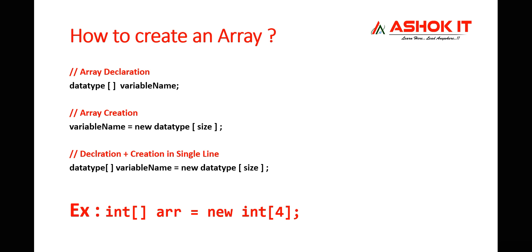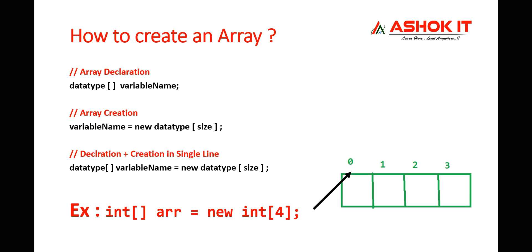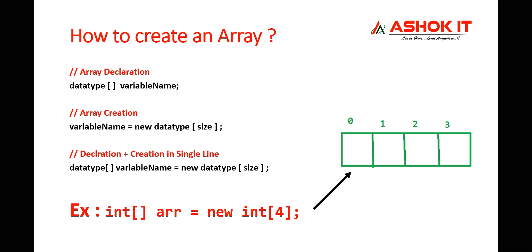For example: int arr[] = new int[4]. Here 'int' is the data type, 'arr' is the variable name, 'new' is the keyword, and 4 is the size — meaning I want to store 4 values. Four indexes will be created. Array index starts from 0, so the last index is always size minus 1. Here size is 4, so the last index is 3 — indexes 0, 1, 2, and 3.